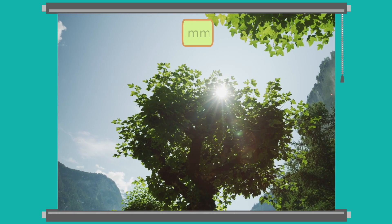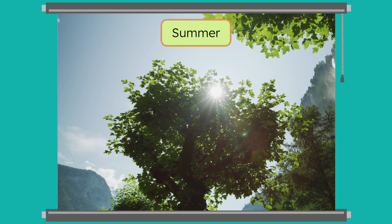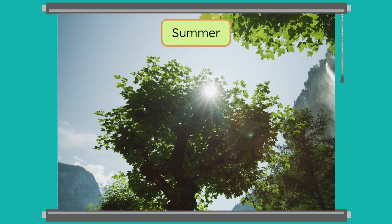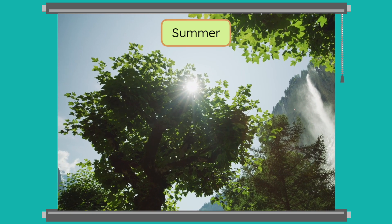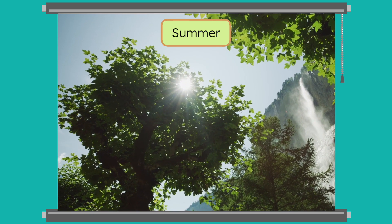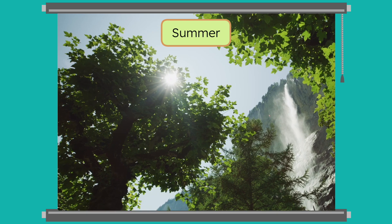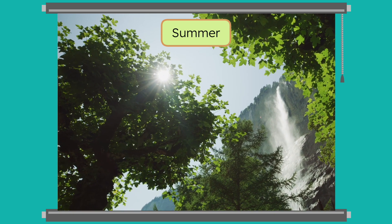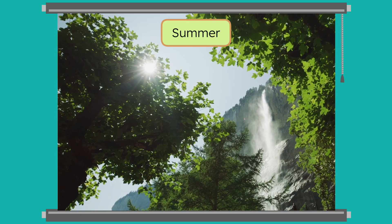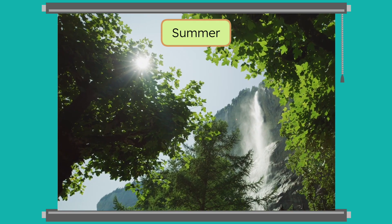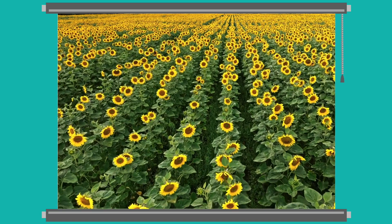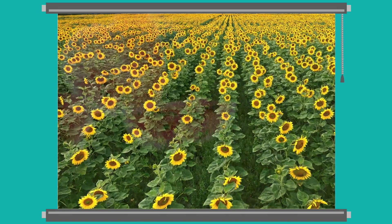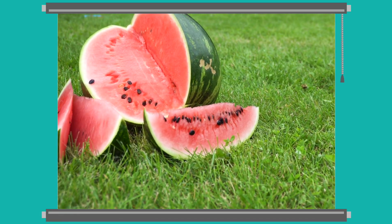Next comes summer. This is when the weather gets hot and sunny, and the days are longer. Plants grow big and full during this time. There are tall, green trees, colorful flowers, and busy gardens. Watermelon is a popular fruit that grows during summer, too.